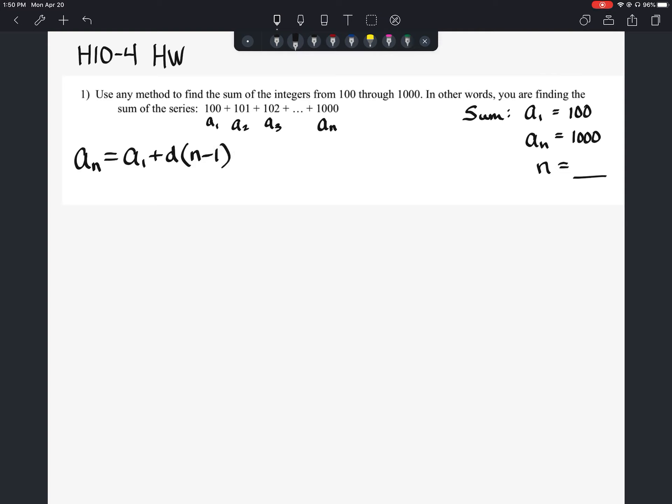a sub n should equal the first term plus the common difference times the quantity of n minus 1. This is first term form. Remember some of you may still use the T of n stuff there. It'd be the same thing as if I said T of n is equal to T of 1 plus the common difference times n minus 1. Either one you can use, it doesn't matter.